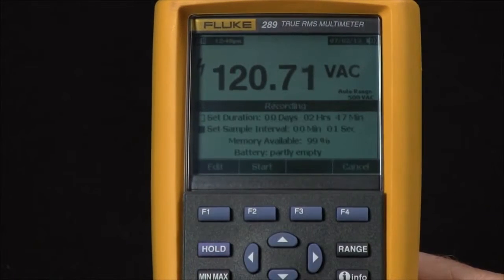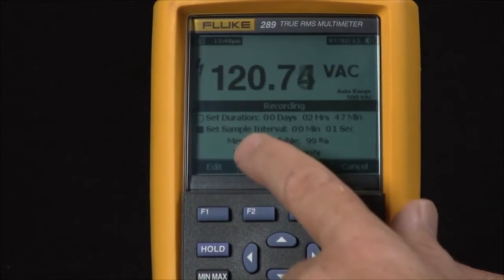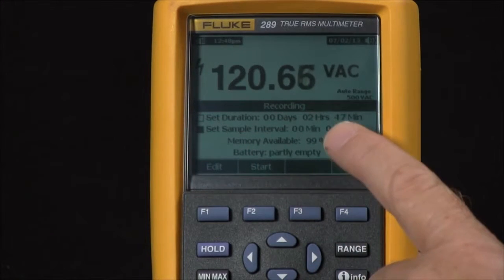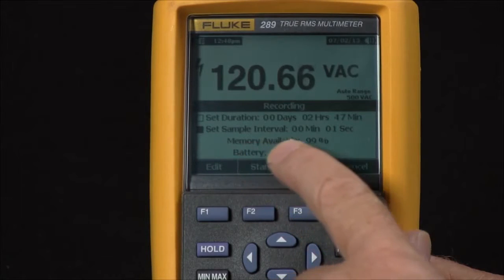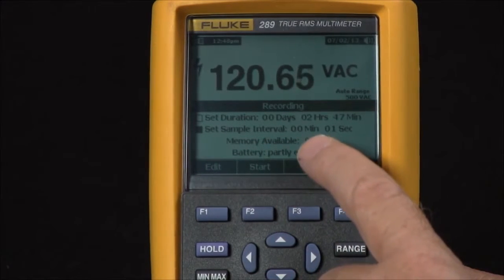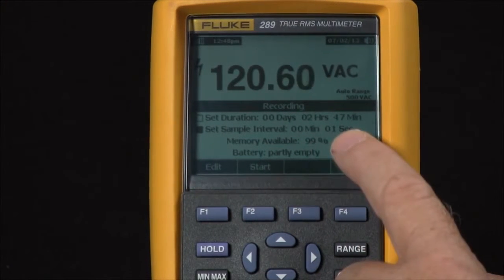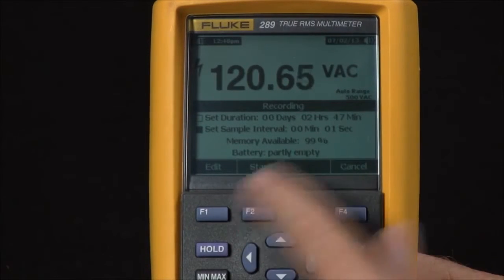If I highlight record and hit record, it asks me to set how long I want to record—in this case, two hours—and how frequently to take a measurement. I can take a reading every minute. Right now I'm going to take a reading every second just so we have something to look at.